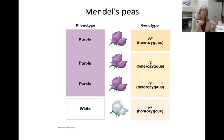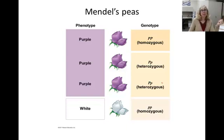Just to be thorough, remember that phenotype and genotype are different. The phenotype is the observable trait, and the genotype is the listing of which two alleles the organism has.